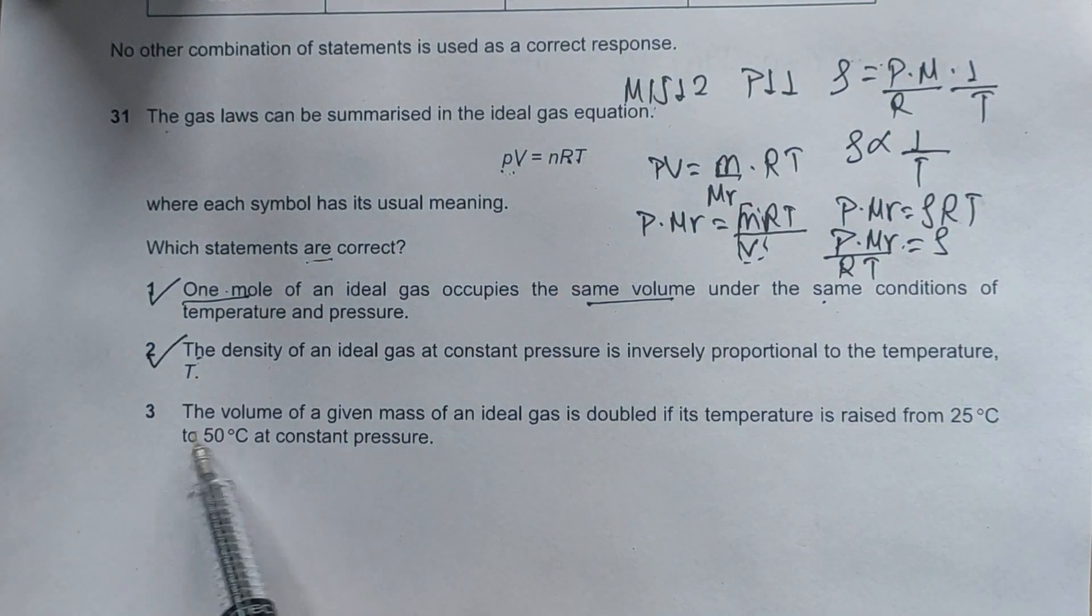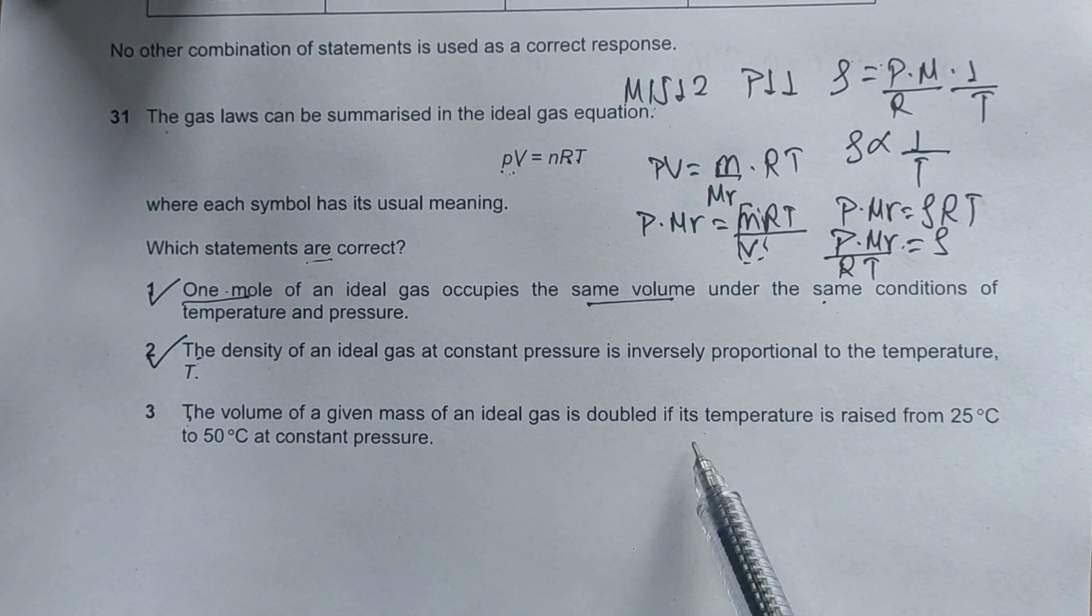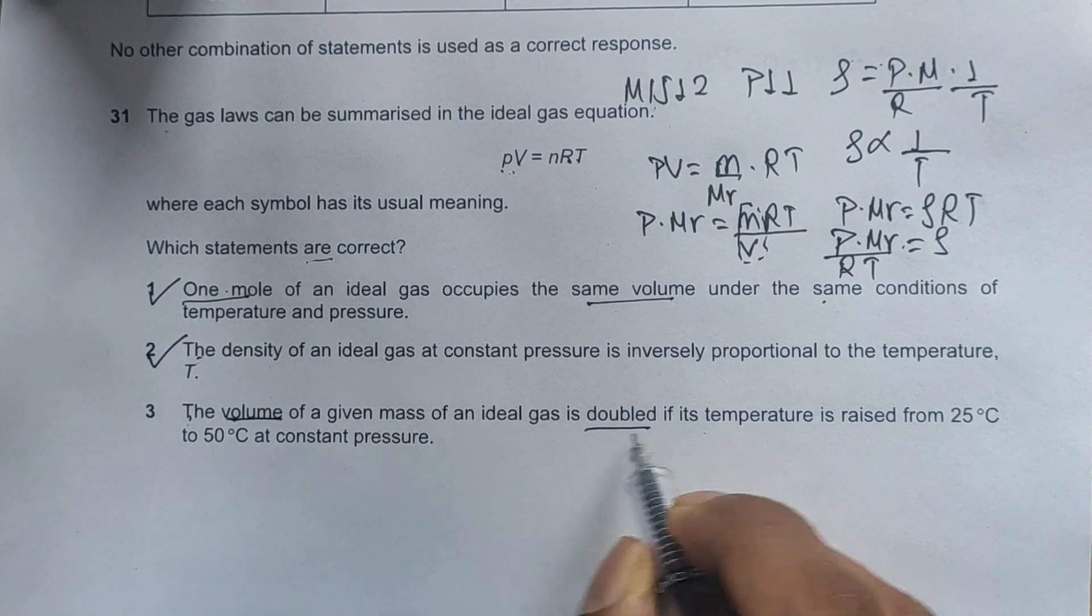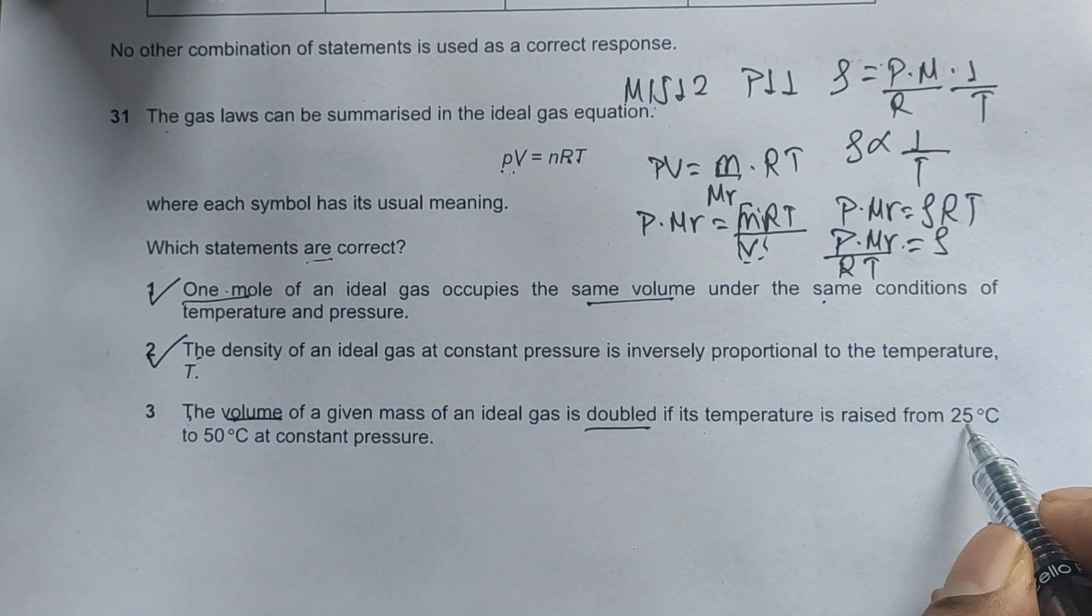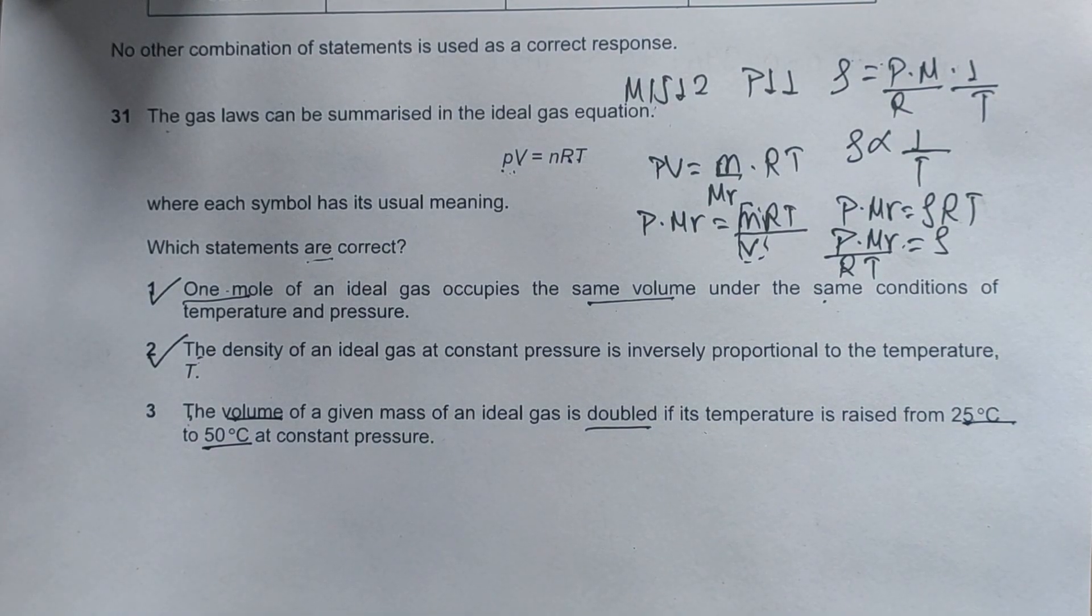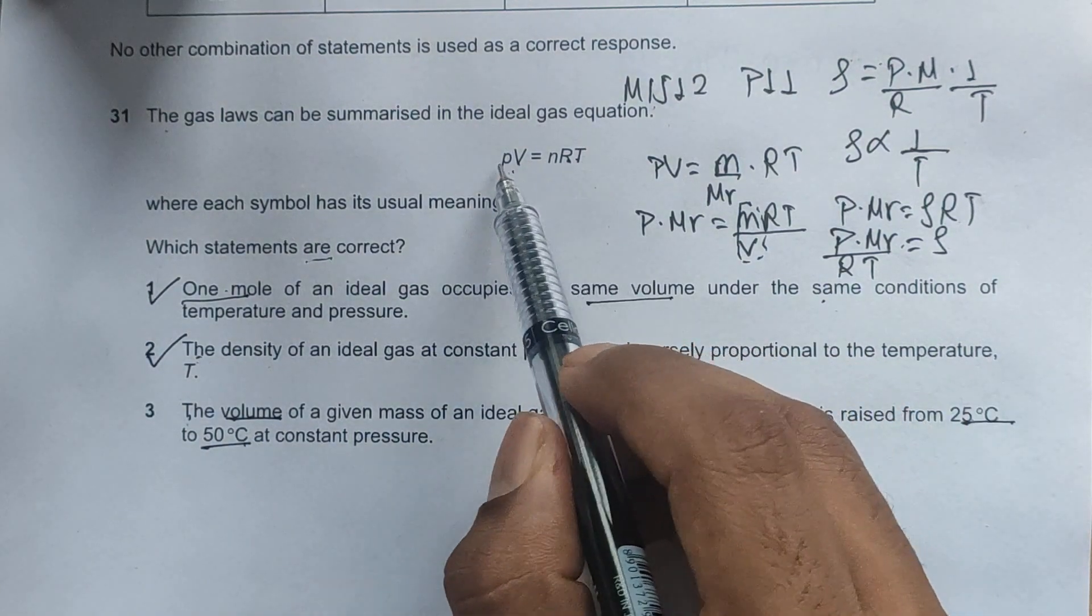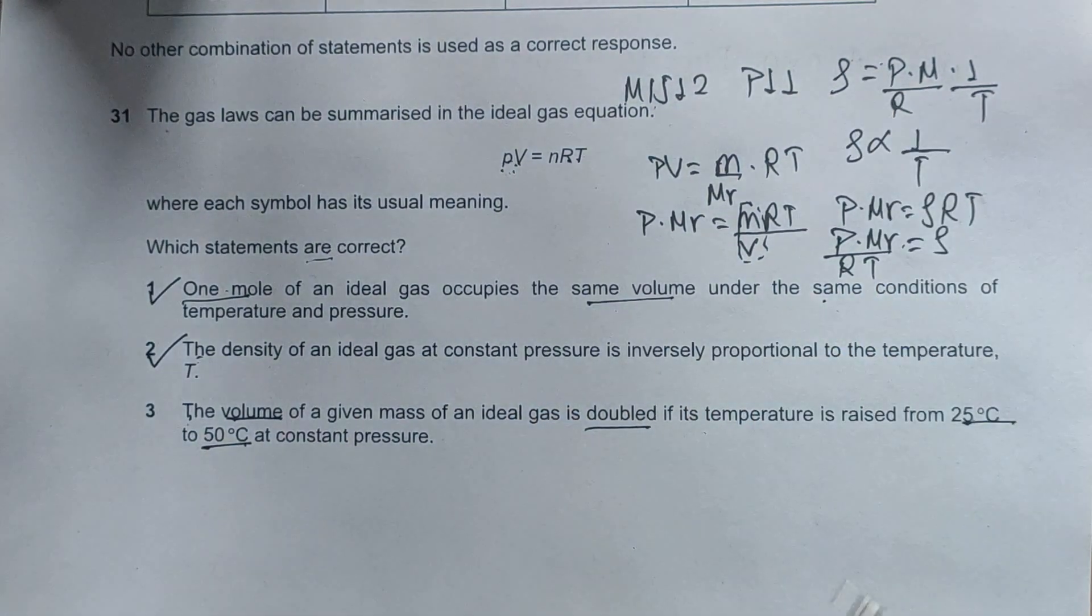Option C: The volume of a given mass of ideal gas is doubled if its temperature is raised from 25 degrees Celsius to 50 degrees Celsius at constant pressure. Pressure is constant. The question asks whether the volume is doubled or not when we raise the temperature from 25 to 50.